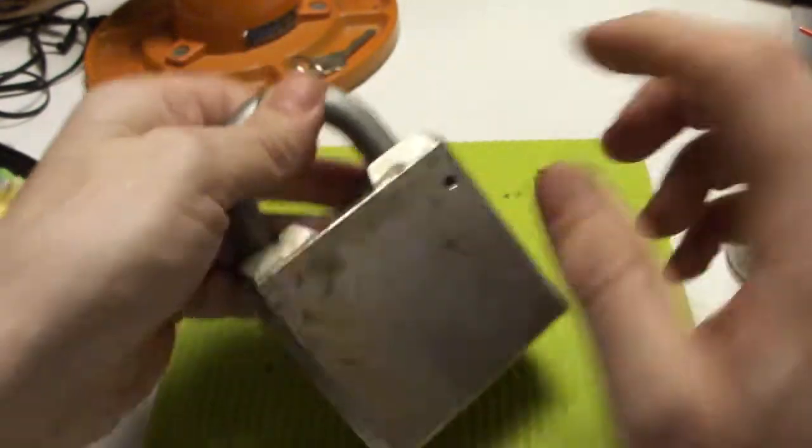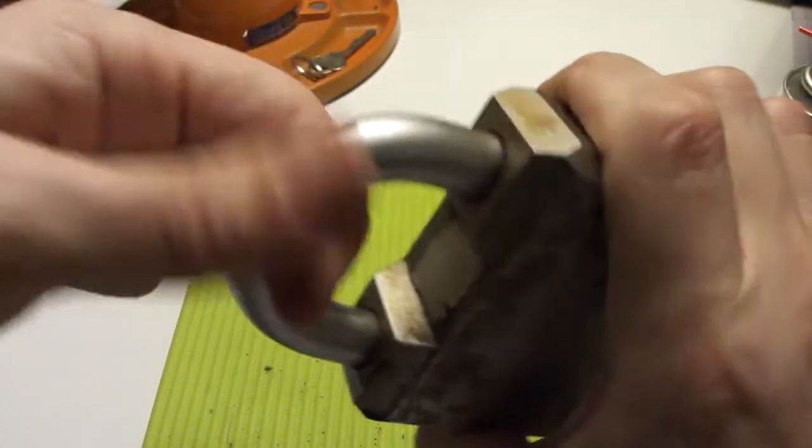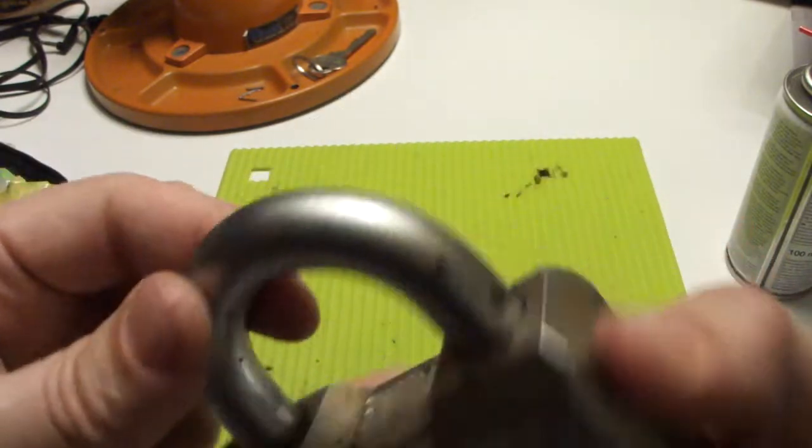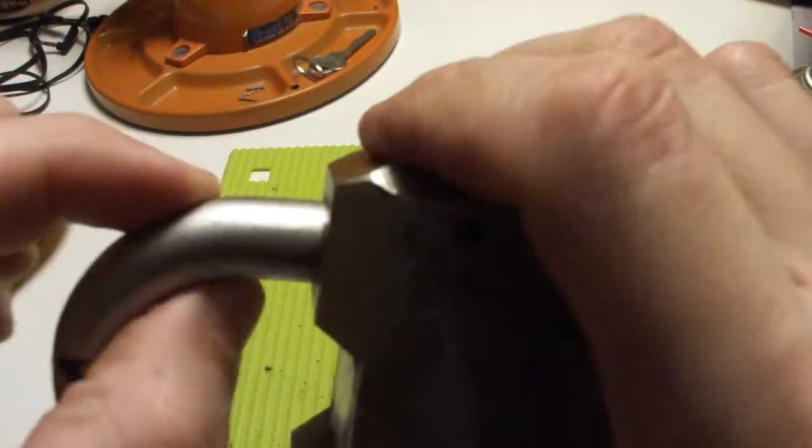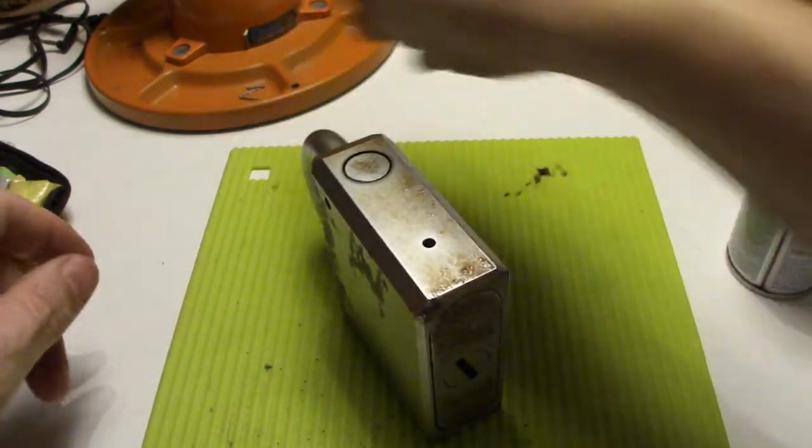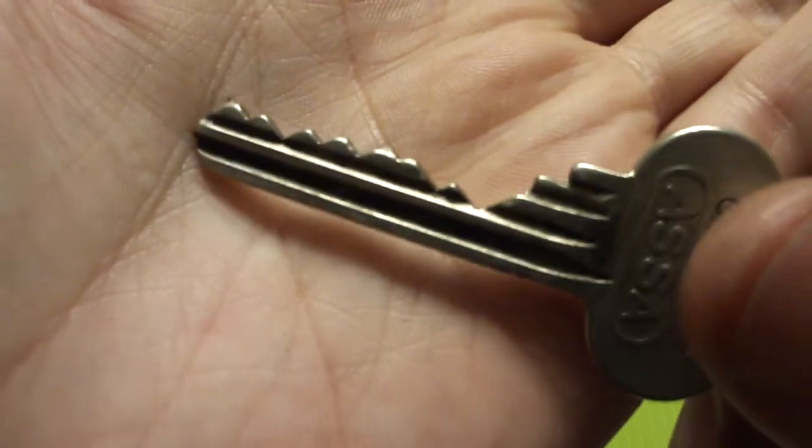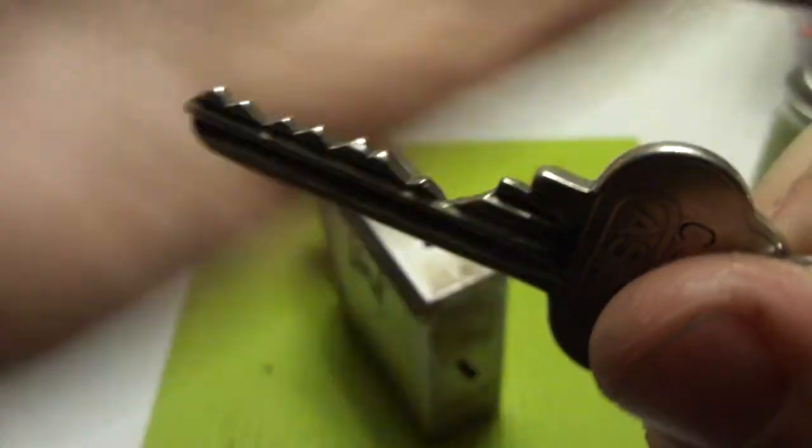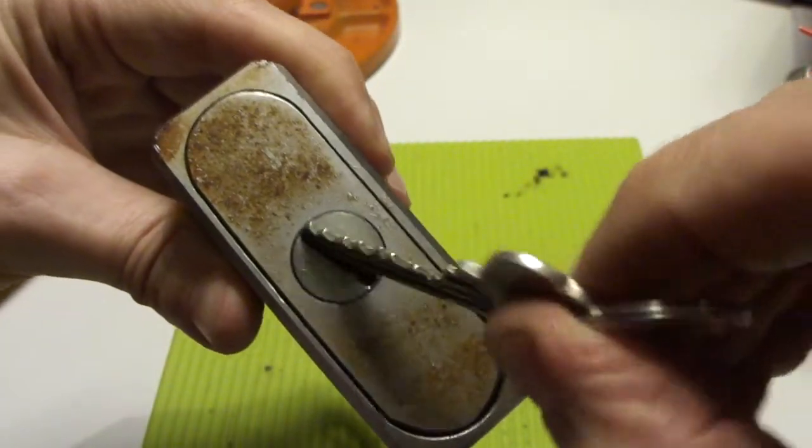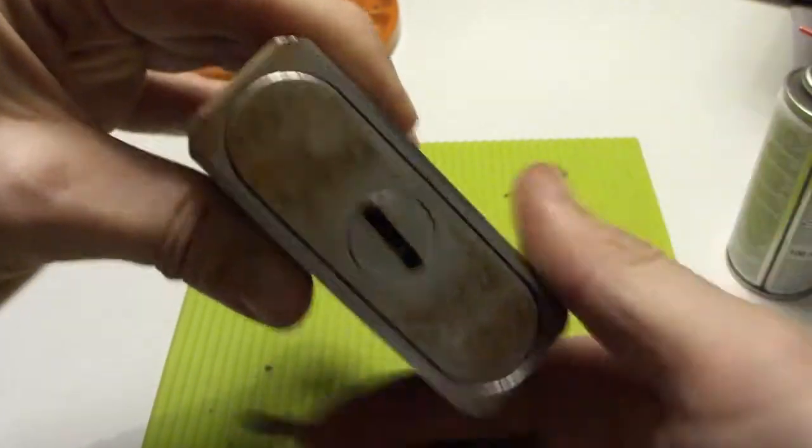It's a steel body padlock with a hardened steel shackle, really massive. I think this is 14mm. And this is the key for it, pretty worn out. Seven pinner, and it has this spinning plate so you can't drill it out.